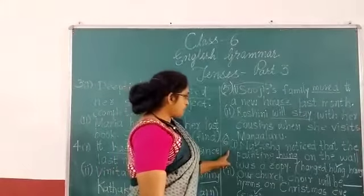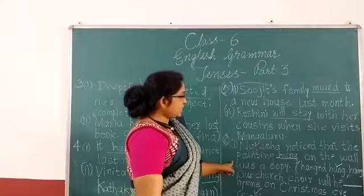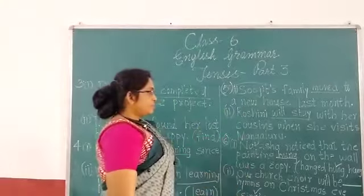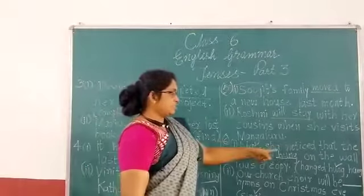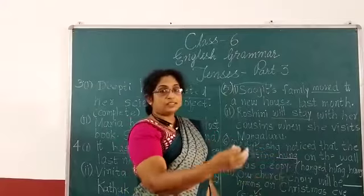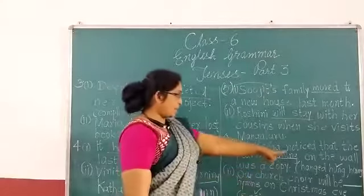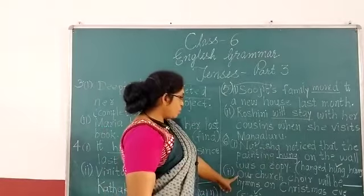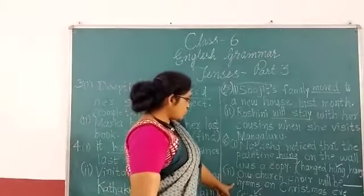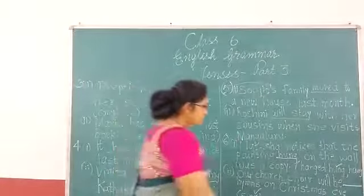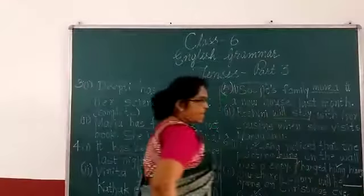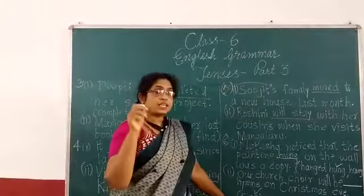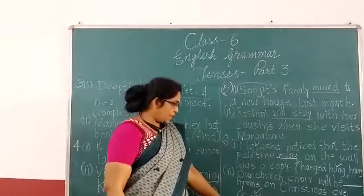'Natasha noticed that the painting dashed on the wall was a copy.' The answer is 'hung' — past tense of 'hang.' Next: 'Our George Square will be dashed on Christmas Eve' — this requires a different form of 'hang,' using 'will be,' so the answer is 'will be hung.'